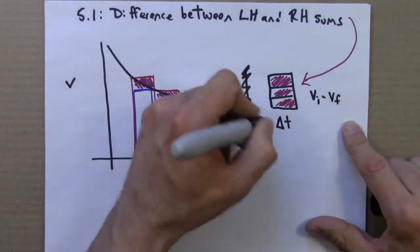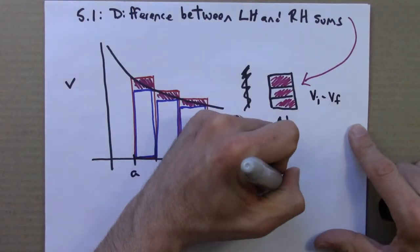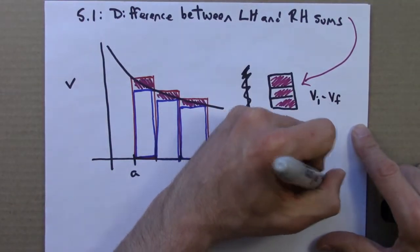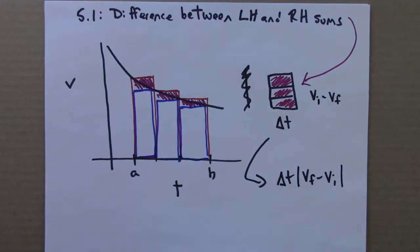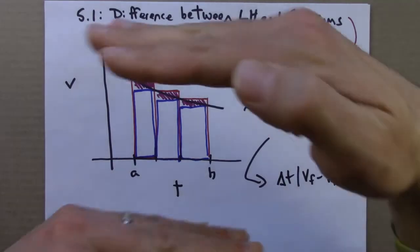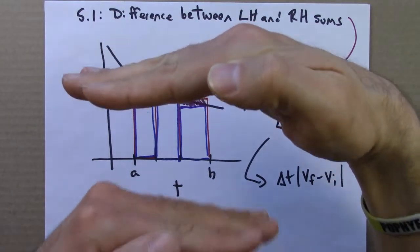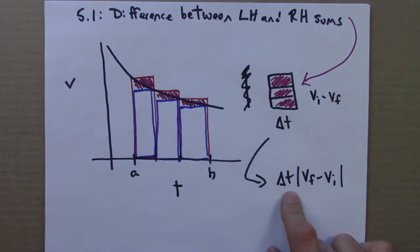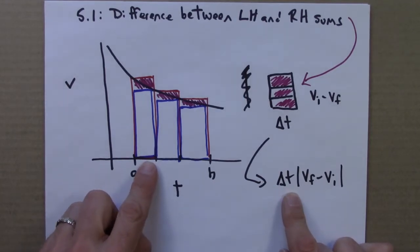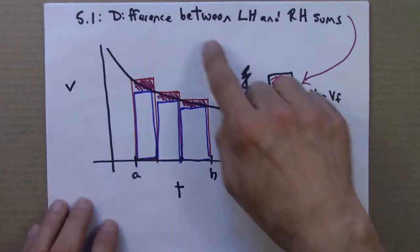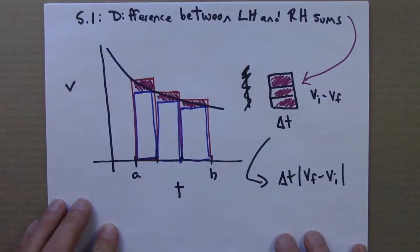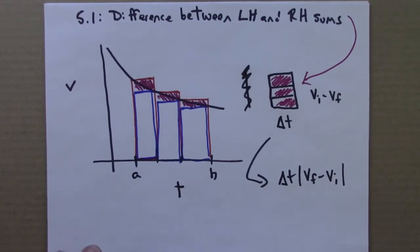And so in general, the formula is delta t times |vf minus vi|. And I put absolute value here because this could be positive or negative, depending on whether or not the cat is slowing down or speeding up. We want the difference to always be positive. We just want to know how far is it between the upper estimate and the overestimate. So this is a very useful formula because it tells us how small a delta t we need to choose in order to get a particular difference between the left-hand sums and the right-hand sums. So I'll next show you how to use this formula to solve a problem.